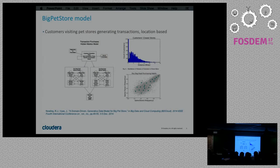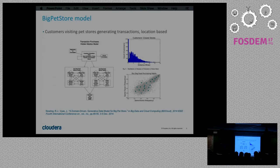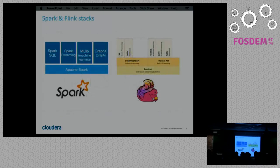In terms of the model we are using, this is the Big Pet Store model. There's a scientific paper out on it. The idea is that it can generate data in a big data setting that, whether small scale or big scale, is still relevant for testing your big data applications. It's based on distributions, which is why it might be relevant for you.